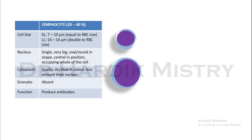Now lymphocyte. The differential count of lymphocyte is 20 to 40%, for both small and large lymphocytes. Small lymphocyte cell size is 7 to 10 micrometers, equal to the size of the RBC. Large lymphocyte is 10 to 14 micrometers, double to the size of the RBC. Nucleus is single, very big, oval or round in shape, central in position, occupying the whole cell. Cytoplasm is scanty, sky blue in color, with less amount than the nucleus. Granules are absent.